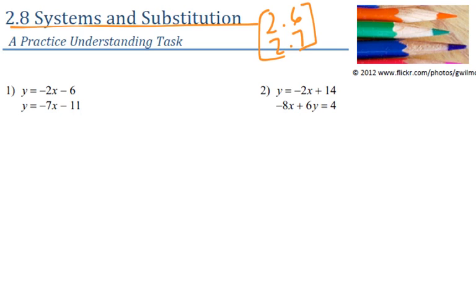We'll just go through it and work through these problems. With substitution, the whole idea is making sure that you have the two pieces that are equal to each other — one being a variable all by itself. In question number one, we have both equations that way; in question number two, we only have one equation that way.